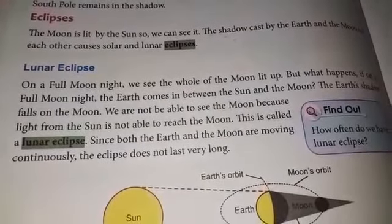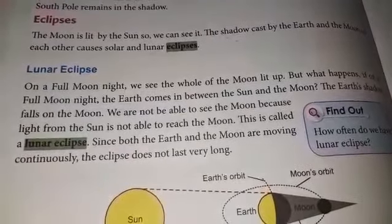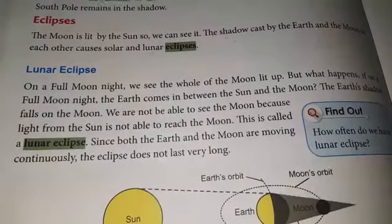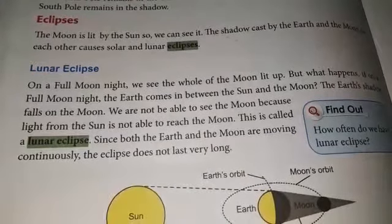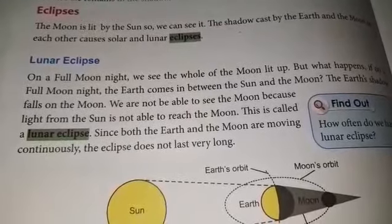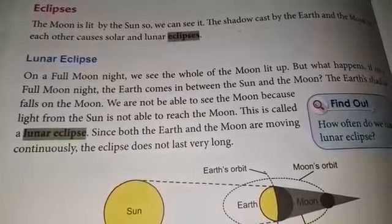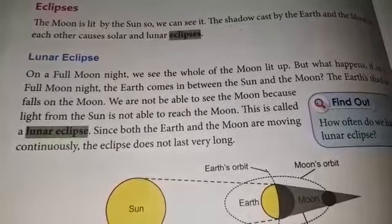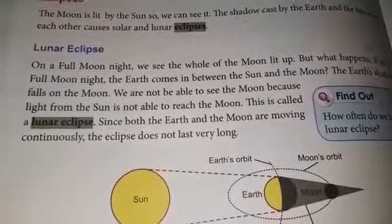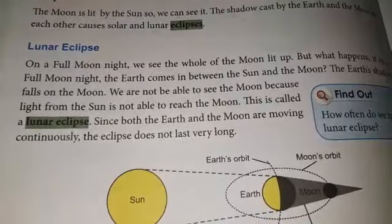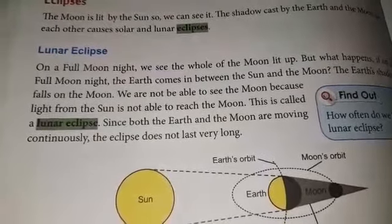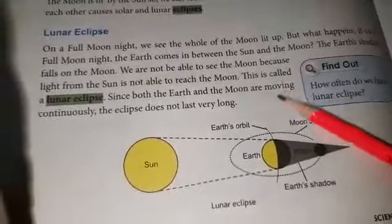On a full moon night we see the whole of the moon lit up. But what happens if on a full moon night the earth comes in between the sun and the moon? The earth's shadow falls on the moon, and we are not able to see the moon because light from the sun cannot reach it. See the diagram here.